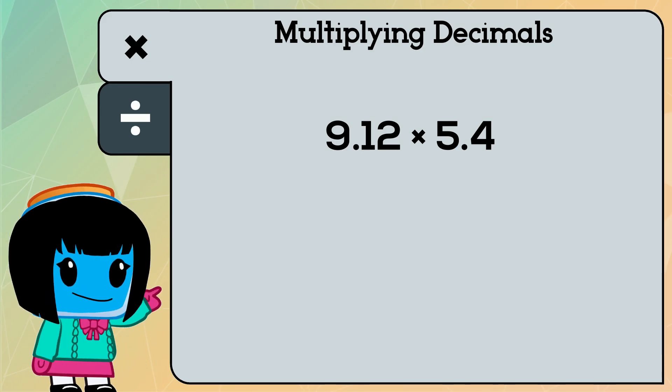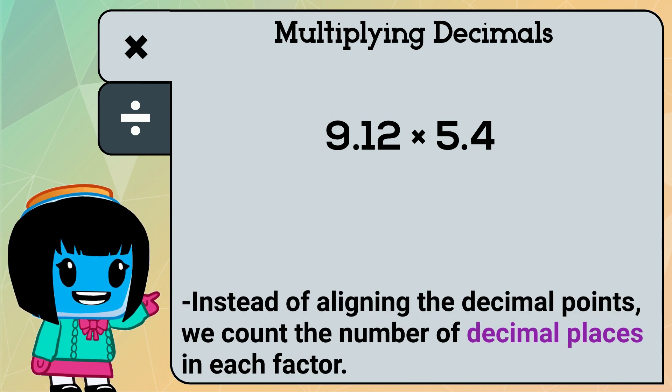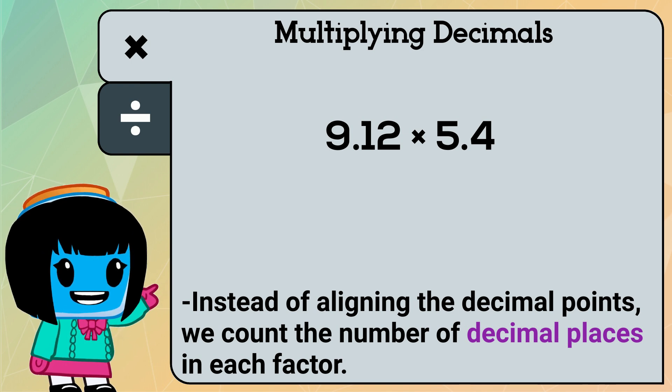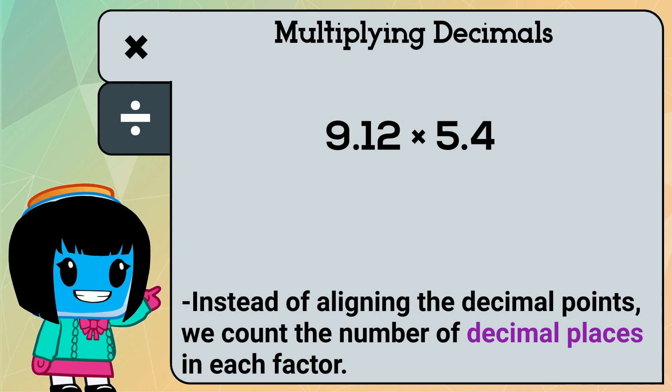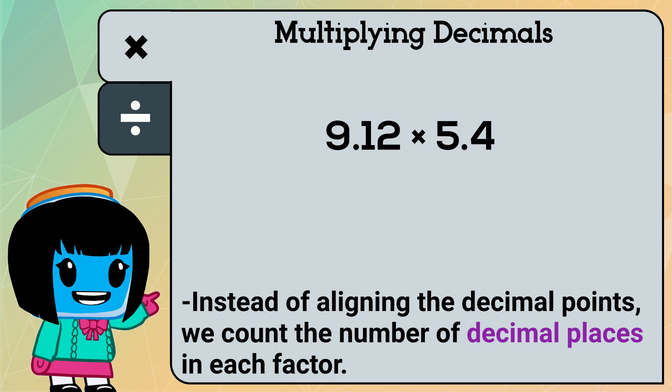Unlike addition, subtraction, and division, we don't need to align the decimal points when we multiply. We count the number of decimal places in each factor to determine where the decimal point goes in our product. In this example, we have a total of three decimal places, so our product will also have three decimal places.